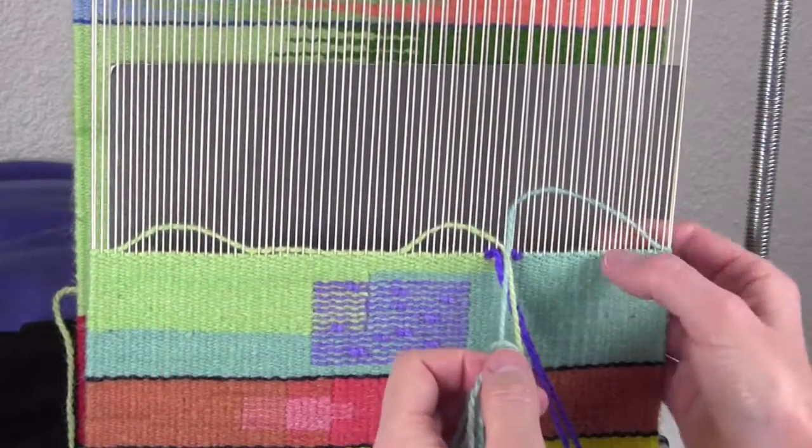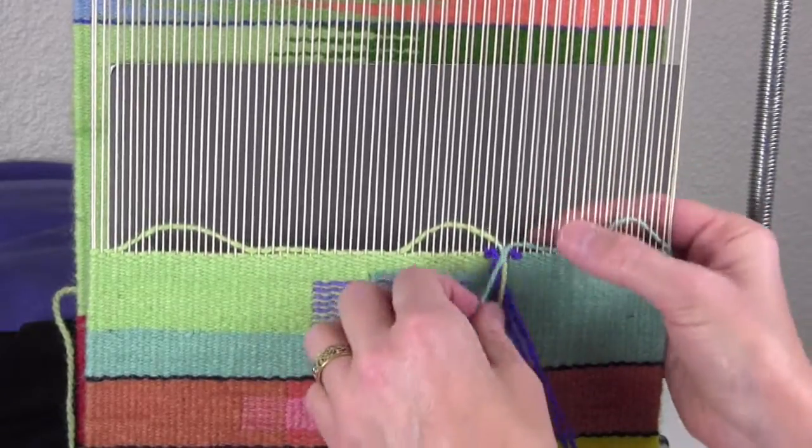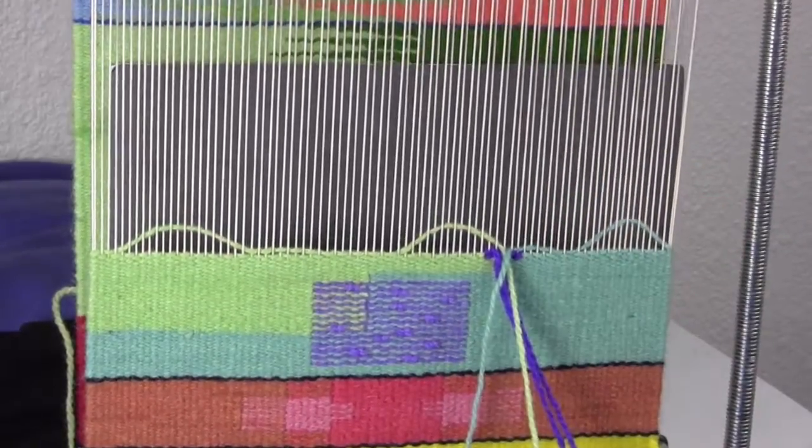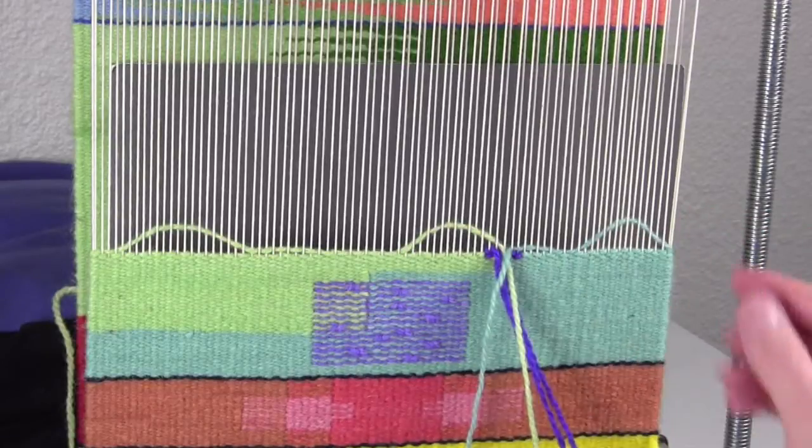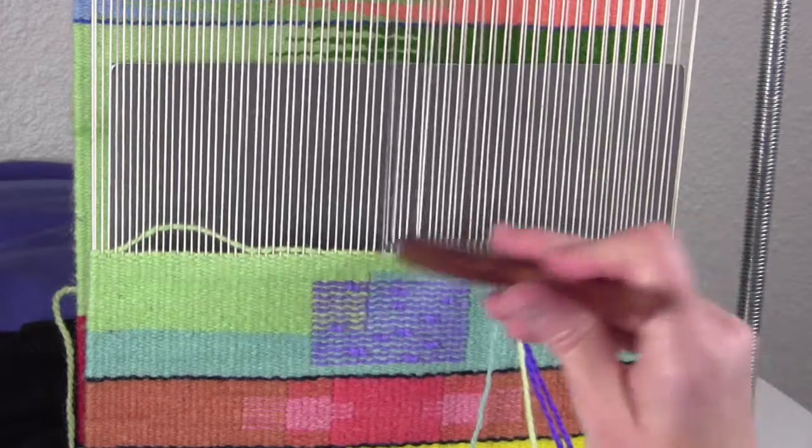I have the opposite problem over here where these warps are coming together a little bit. So I try to put a nice big bubble in there. More weft goes in when they're coming together and that weft helps to push the warp out again.